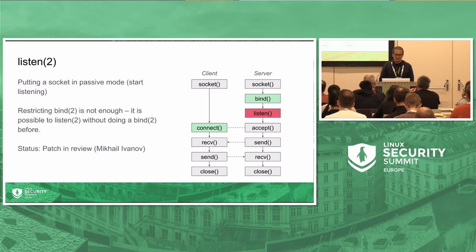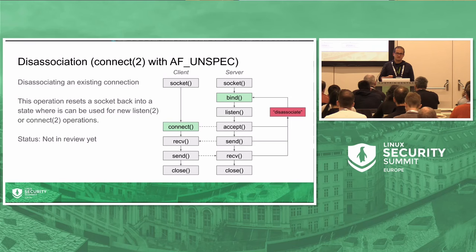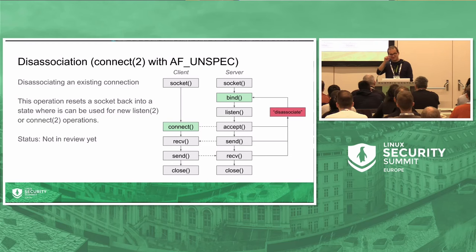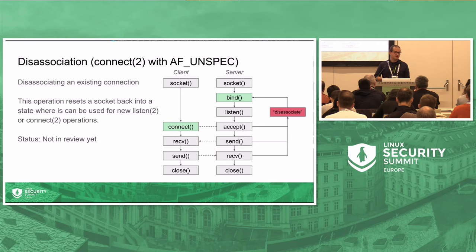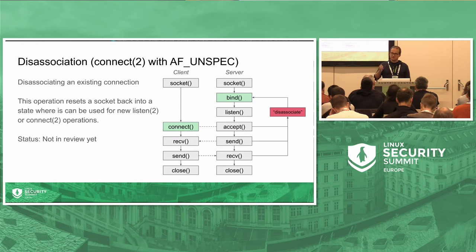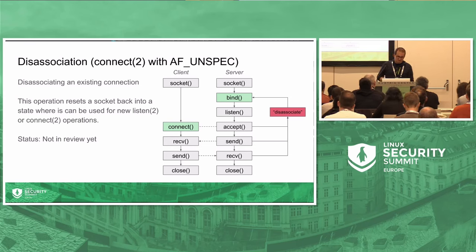There's another Linux extension to the BSD socket API: calling connect with AF_UNSPEC disassociates a socket, walking it back to an earlier state so it can be reused for a new connection or listening server. For Landlock, this is a potential problem — if an attacker breaks into a network server and has a client socket, they could disassociate it and establish new connections. That restriction is also planned for an upcoming patch.